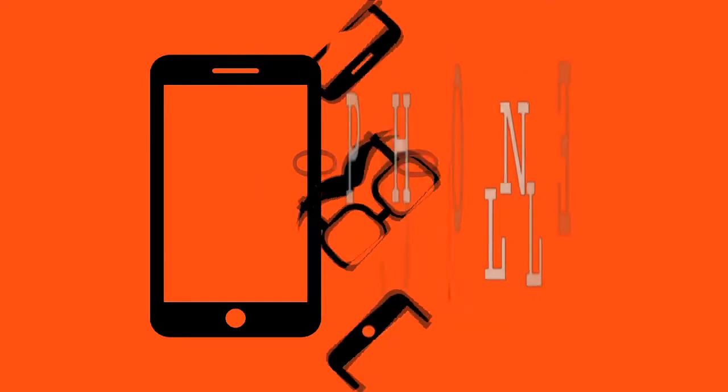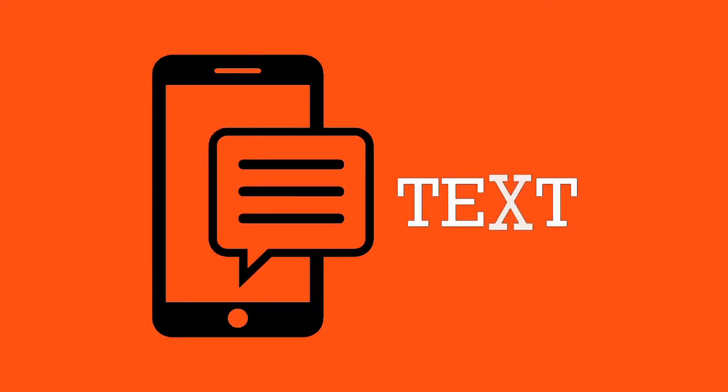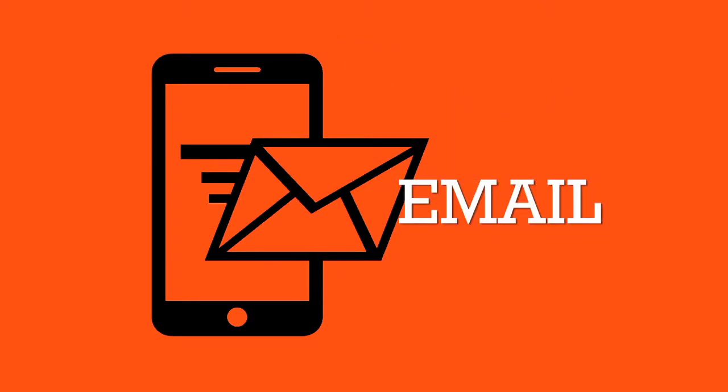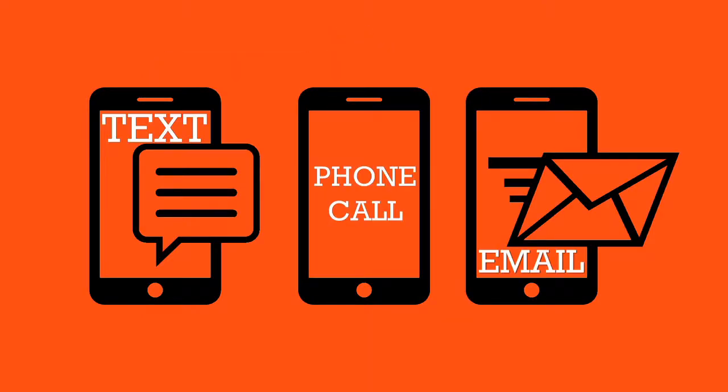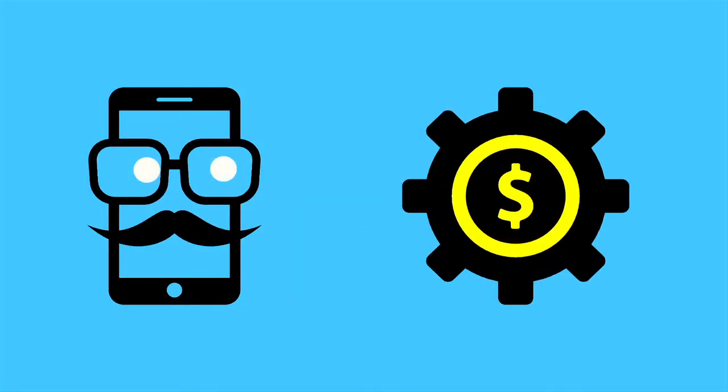Fraudsters engaging in social engineering may use phone calls, text messages, emails, or a combination of the three to trick a victim into thinking that the fraudster is a legitimate authority.